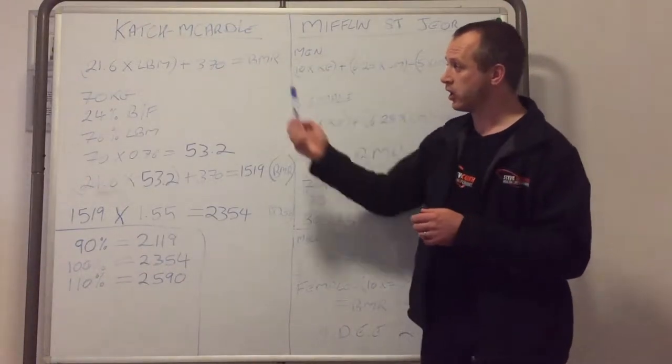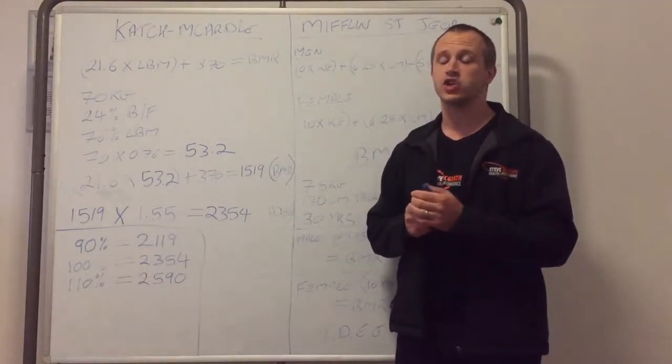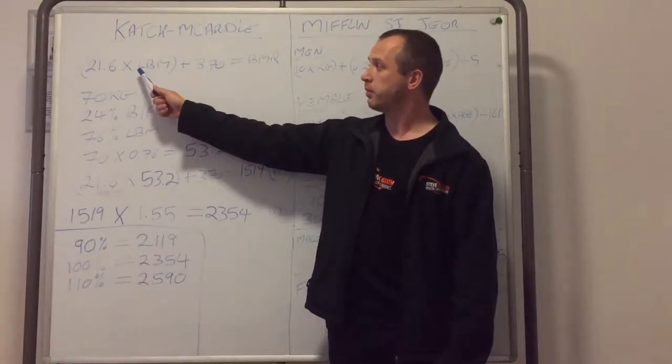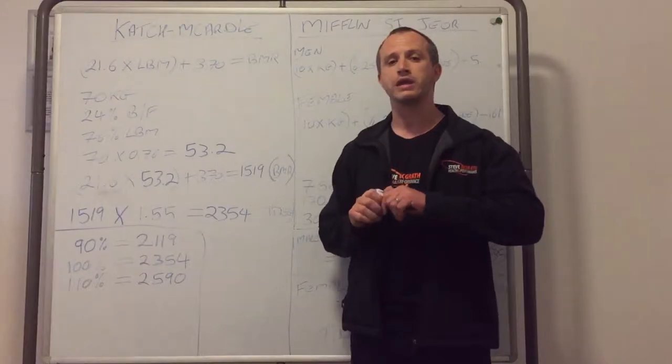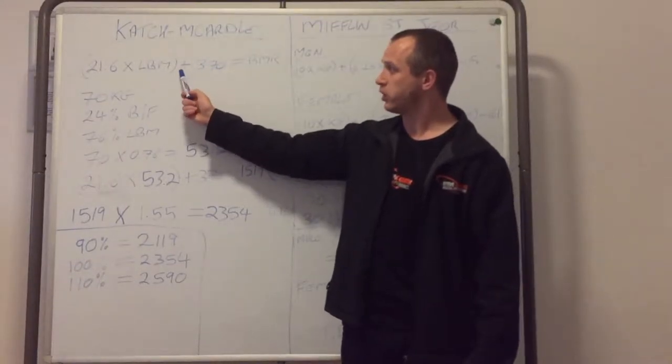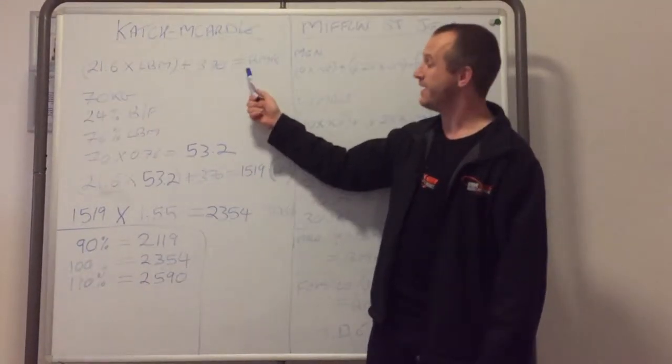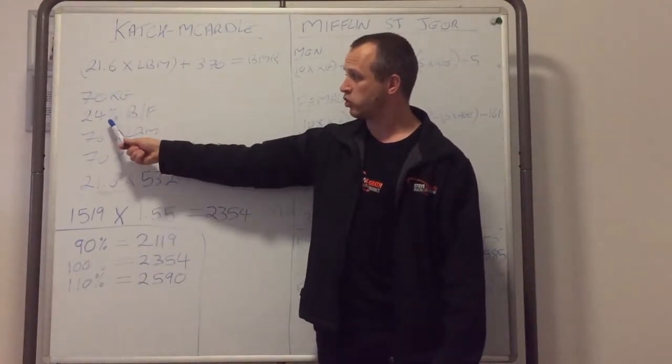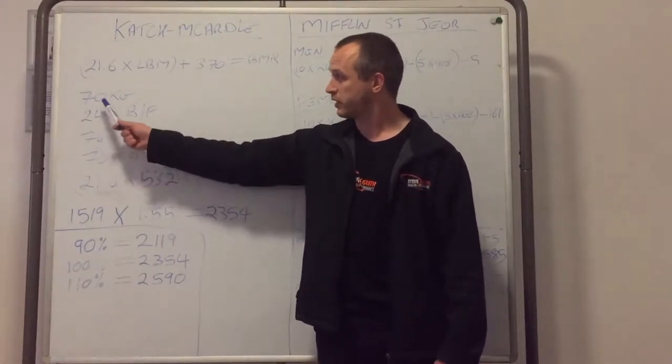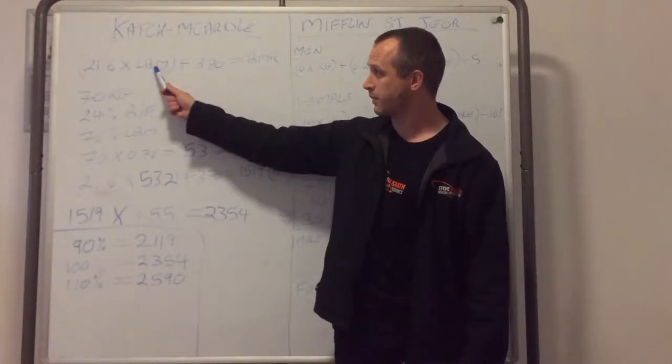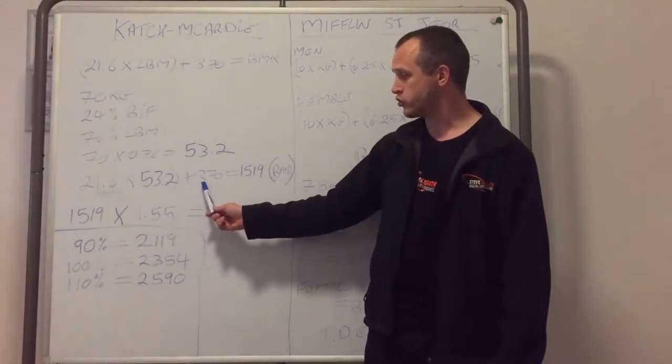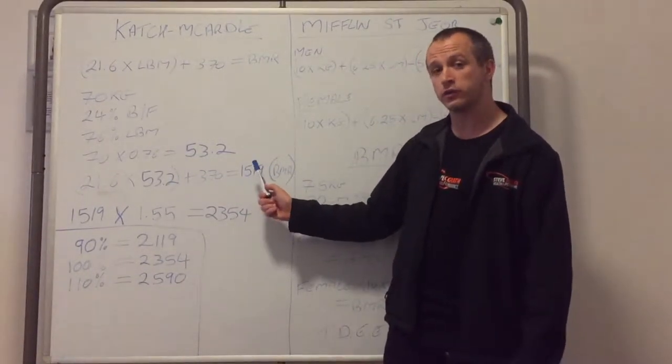So the Katch-McArdle—you need to know your body fat for this, you need to know your weight in kg, and it's the same formula for men and women. The formula is 21.6 multiplied by your lean body mass (that's your body weight not including your fat), and then you add 370 to your answer, and that gives you your Basal Metabolic Rate. So if we take a 70 kg person who has 24% body fat, that means they have 76% lean body mass. 76% of 70 is 53.2. So we multiply 21.6 by 53.2, we add 370, and we get a BMR of 1519.